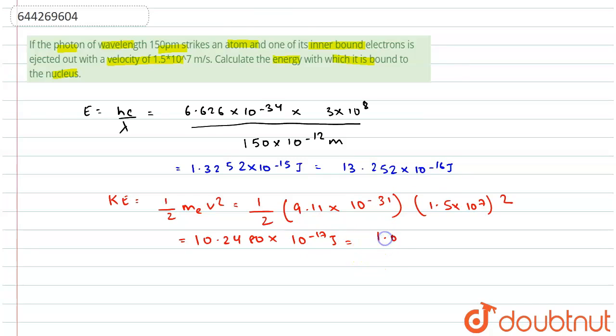This equals 1.025 into 10 power minus 16 joules. We found the energy of the ejected electrons.